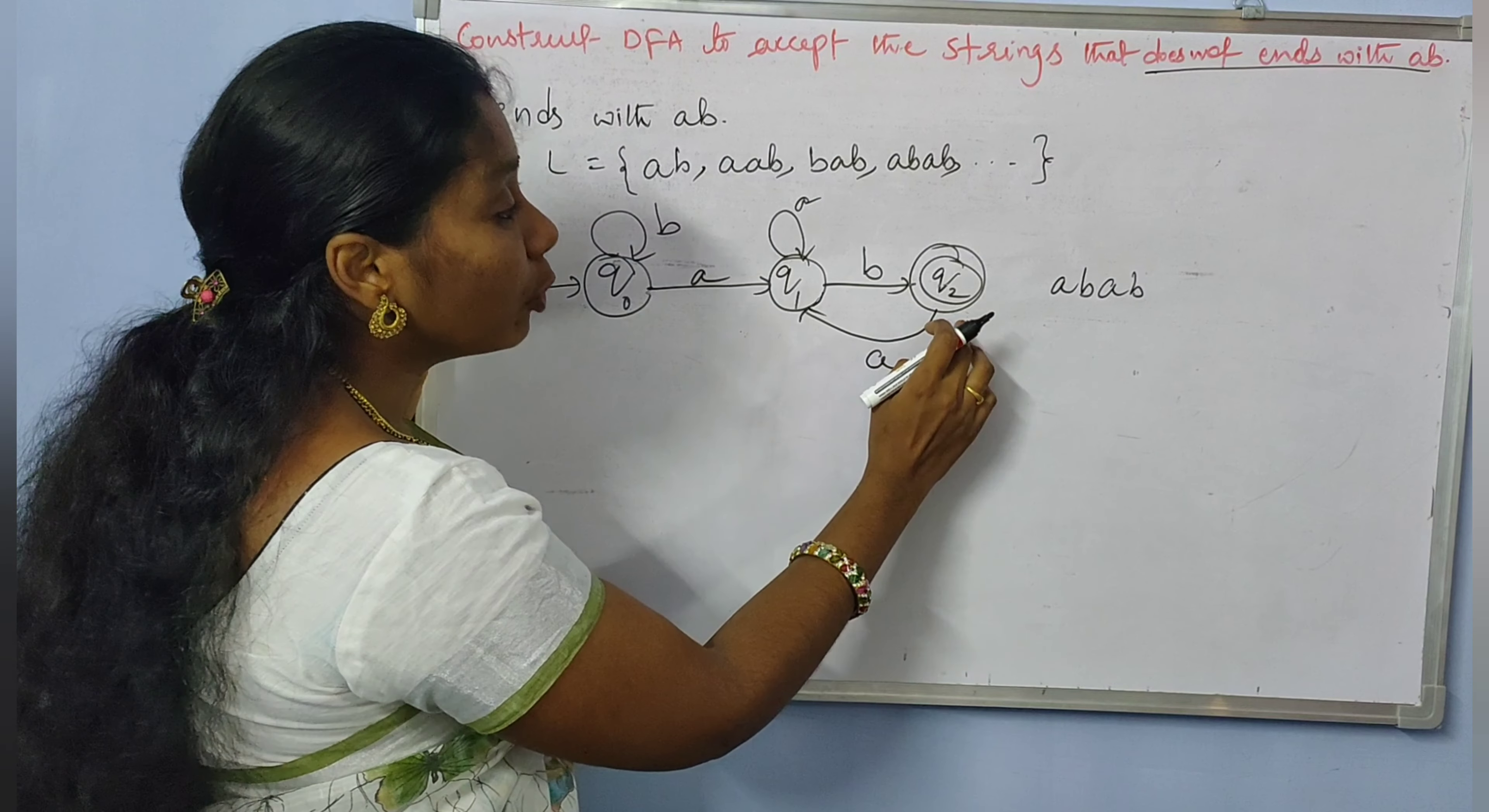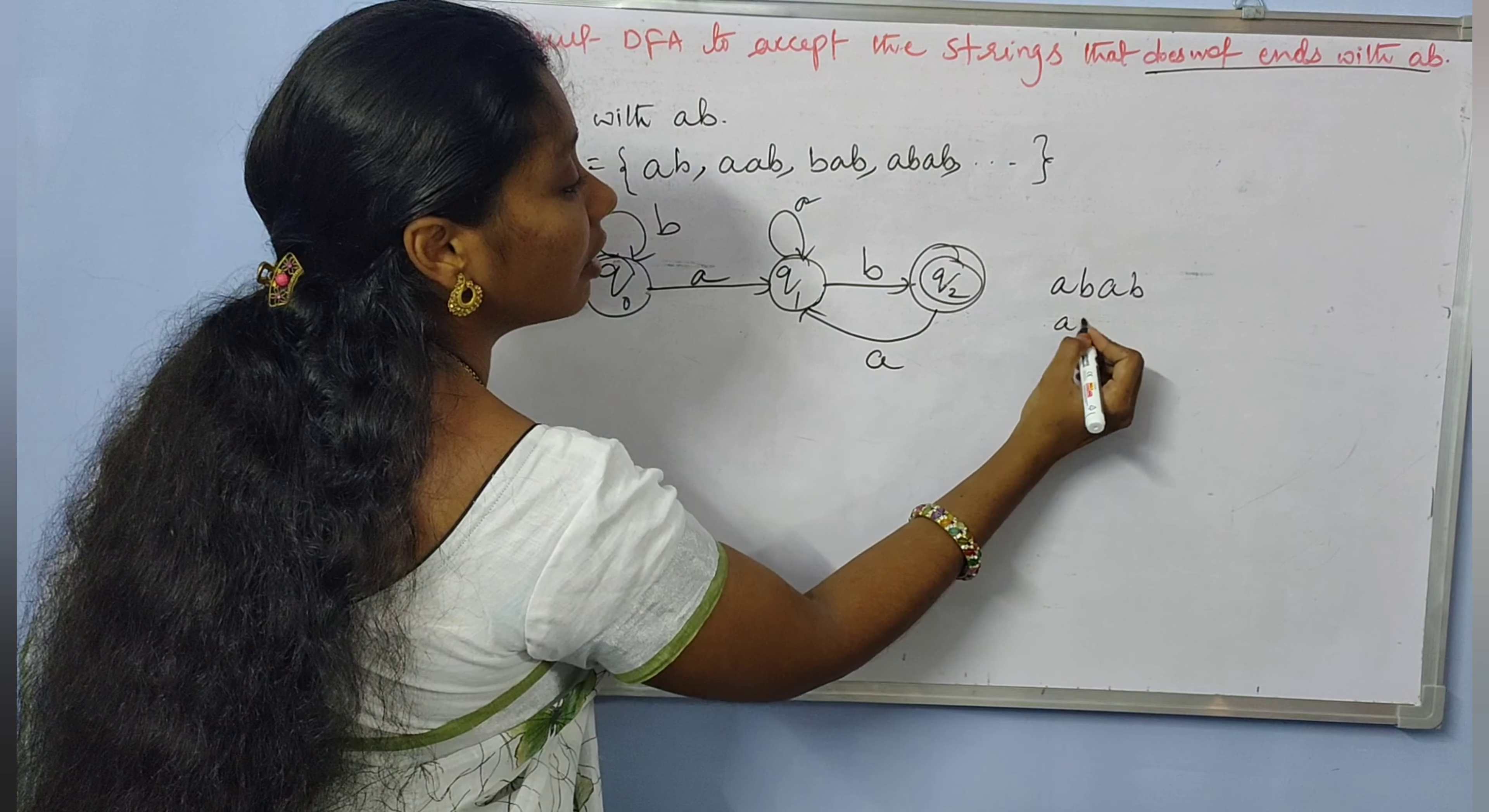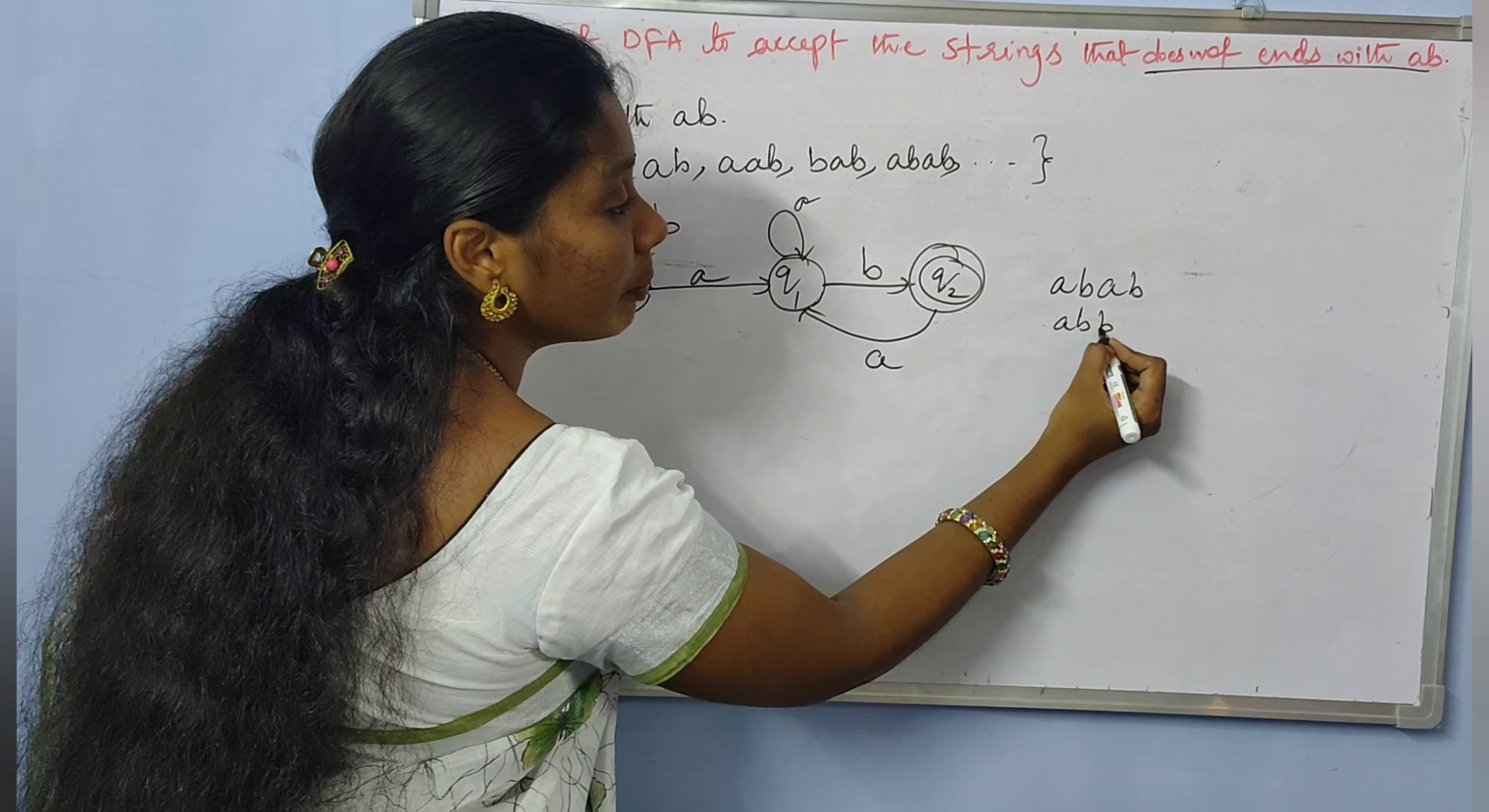For example, from Q2 we need a B transition. At Q2 we have string AB. From there if B comes, AB plus B.